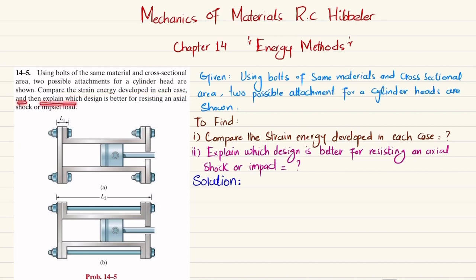Then explain which design is better for resisting axial shock or impact load. You can see this is design A and this is design B. This is the piston and this is the cylinder head. This is one arrangement using four bolts of length L1, and here the cylinder head is held by a single bolt of length L2 on each side.